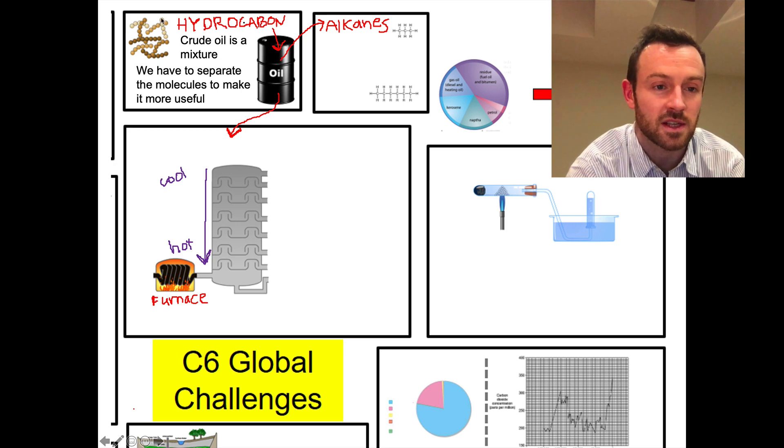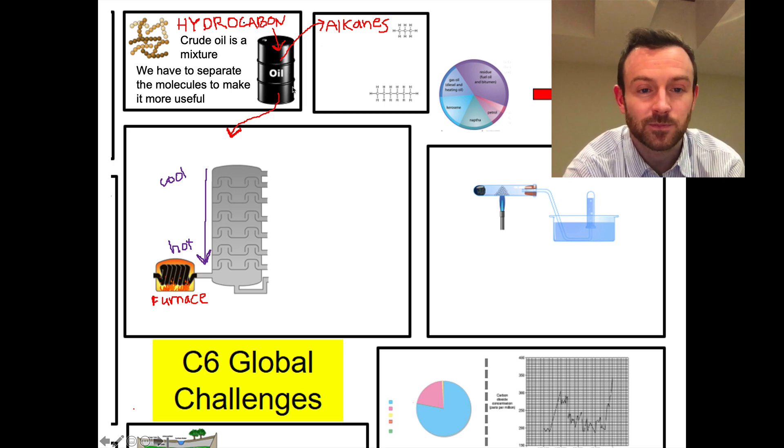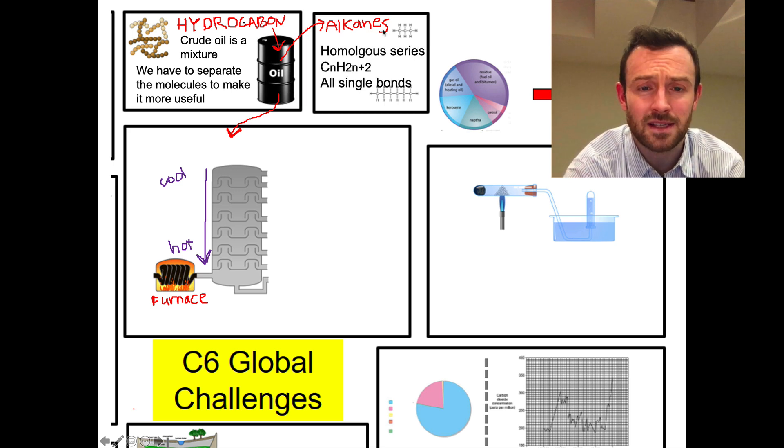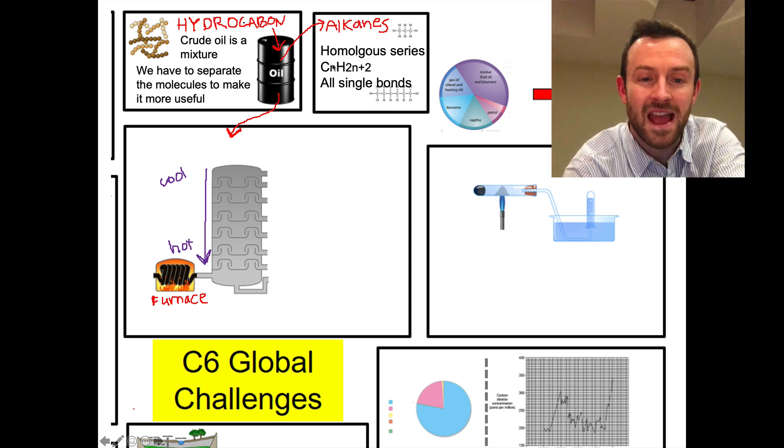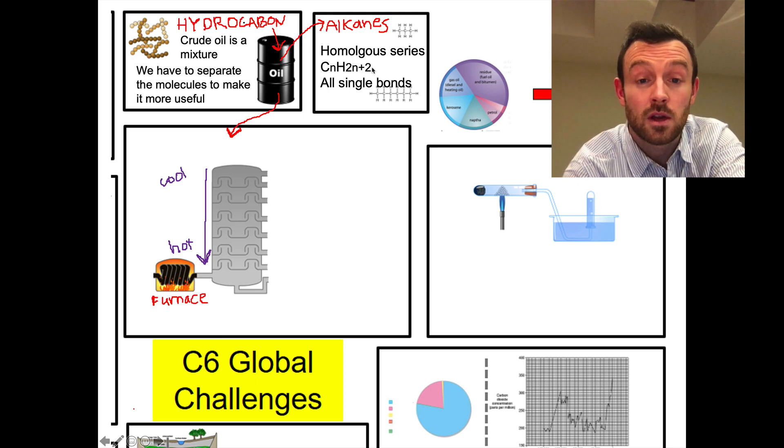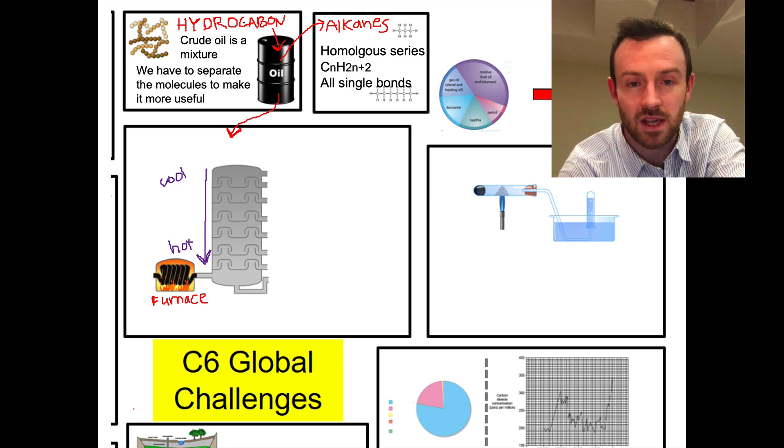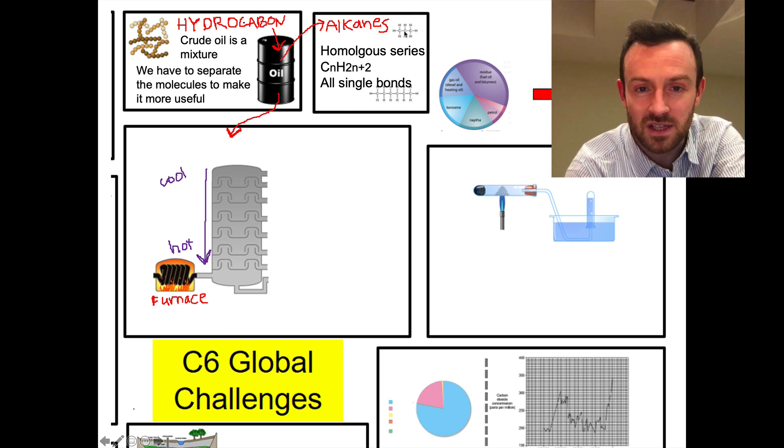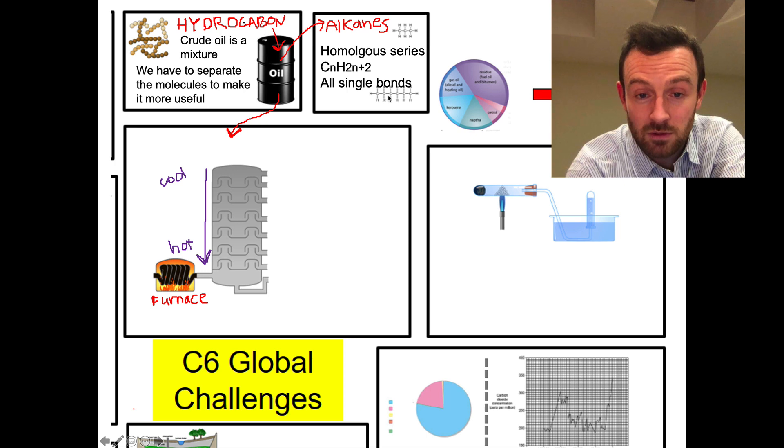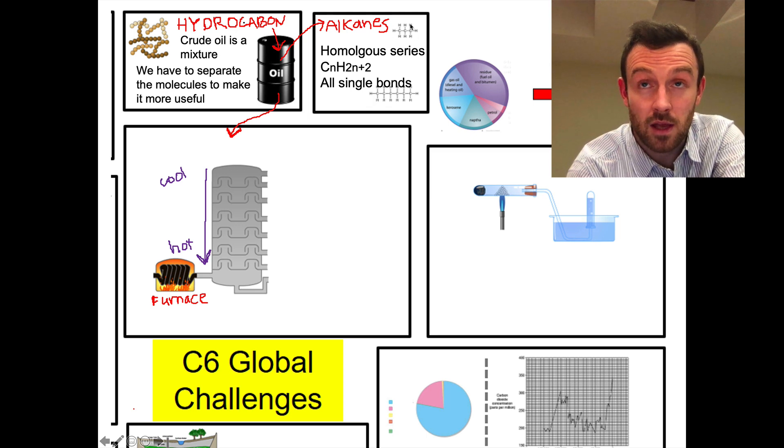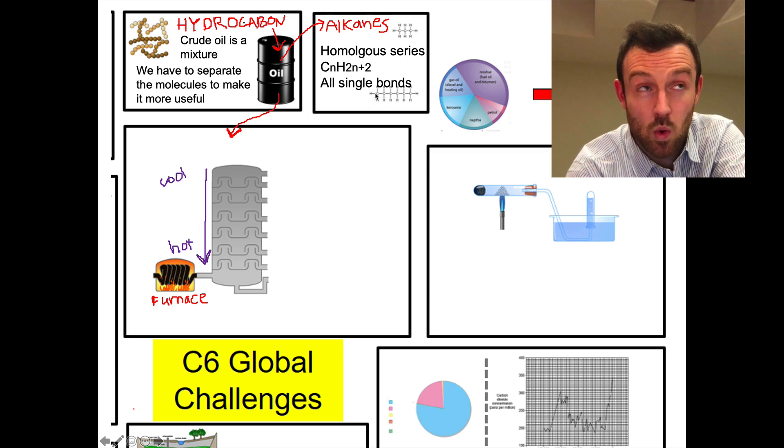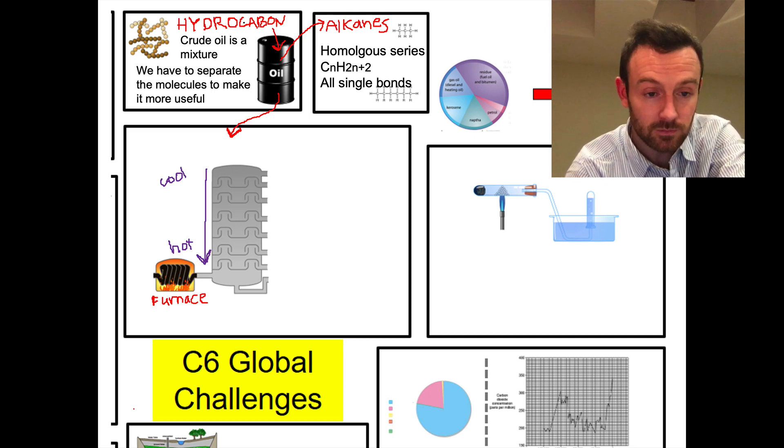So crude oil is a mixture of these hydrocarbons, and we have to separate the molecules to make it more useful. This is a representation - we can see molecules of different lengths, different sizes, and that's what crude oil would be like if you could see the molecules. Now most of those molecules are called alkanes. Alkanes are a type of hydrocarbon that forms a homologous series. So all the alkanes follow a similar pattern, and that means that if they have n carbon atoms, then they've got 2n + 2 hydrogen atoms. They also all contain single bonds. Here's one up here - this is a hydrocarbon which has the formula C3H8, and this one down here is one, two, three, four, five, six - this is C6H14. So that would be called propane, and this one with six carbons, that is hexane.